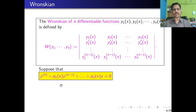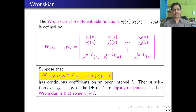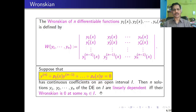Suppose we have the nth order linear ODE in standard form: y⁽ⁿ⁾ + p₁(x) y⁽ⁿ⁻¹⁾ + ... + pₙ(x) y = 0, with continuous coefficients on an open interval I. Then n solutions y₁, y₂, ..., yₙ are linearly independent if and only if their Wronskian is nonzero at some point x₀ in I. We will now see a proof of this statement for nth order ODEs.